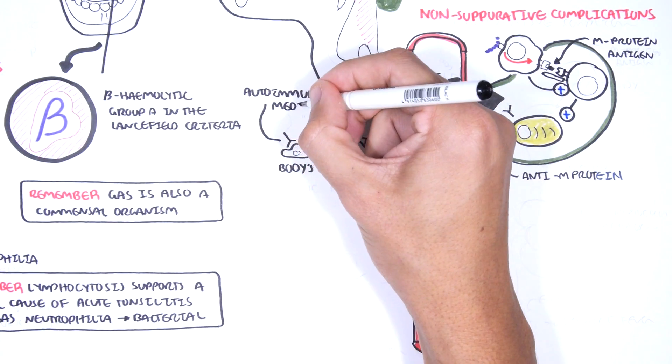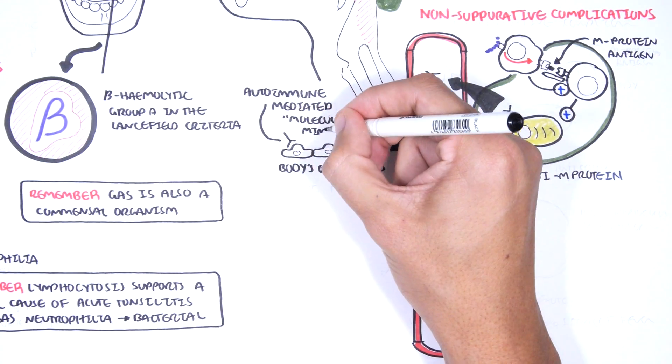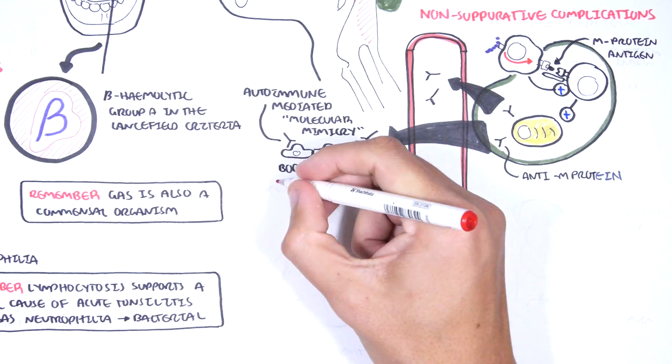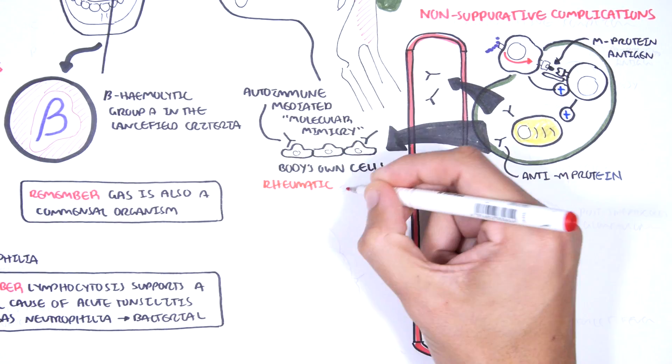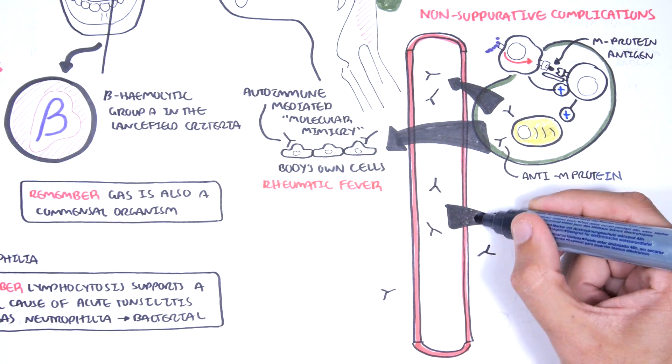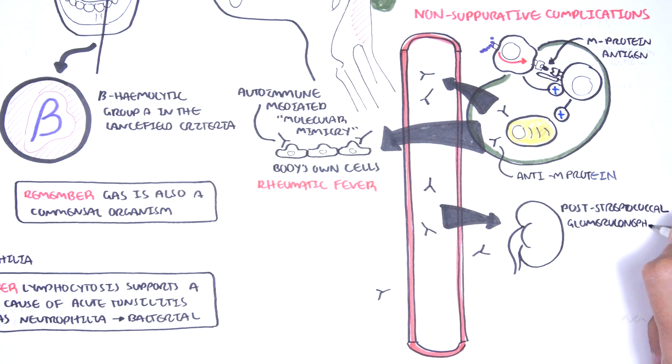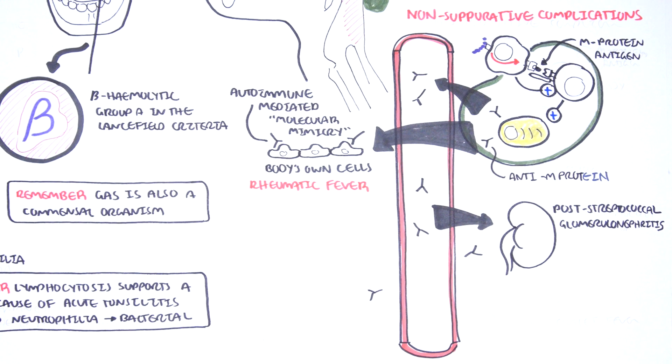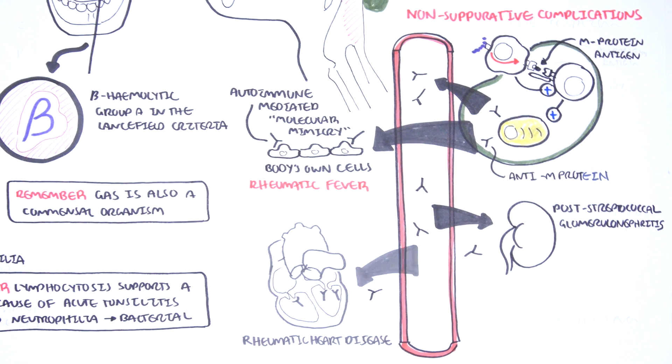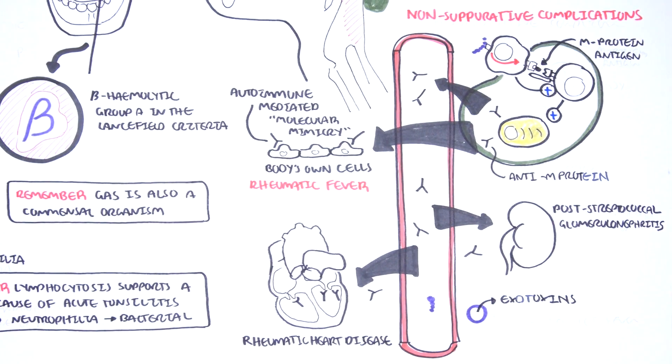This can result in rheumatic fever when the antibodies start attacking the body's own cells through molecular mimicry. The antibodies produced against the Group A Streptococcus antigens can form immune complexes and also accidentally attack the kidneys, causing post-streptococcal glomerulonephritis. The antibodies against M-proteins can also cross-react with the heart structures, leading to rheumatic heart disease. Finally, exotoxins produced by Group A Streptococcus can lead to scarlet fever.